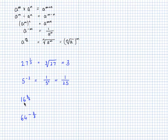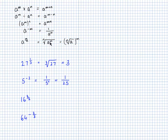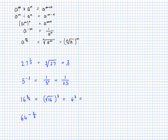Now we're at 16 to the power of 3 over 2, and I'm going to use this last rule again. It's easier to take the root first to make the number smaller, then raise to the remaining power. So I'm going to take the square root of 16, which is 4, and then cube it. 4 cubed is 64.